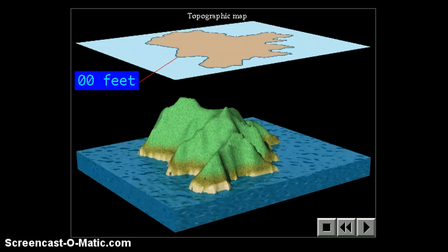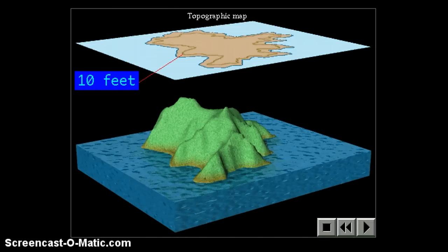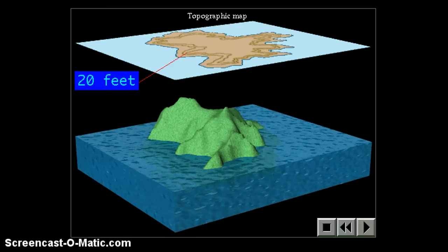And then we will raise sea level by 10 feet and trace the new shoreline. Now, notice that line that got traced, every point along that line is at equal elevation. We know that because the sea level would level out and be flat. Raise it 10 more feet and trace the 20-foot contour line.